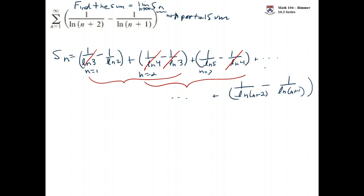This cancellation will continue on and on and on. Let's write what the previous term is to the nth term. We have 1 over the natural log—this is when n equals n minus 1—we have 1 over the natural log of n plus 1 minus 1 over the natural log of n.